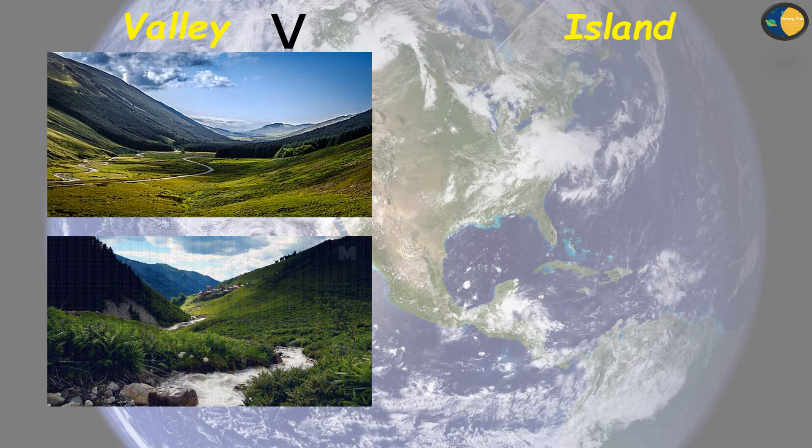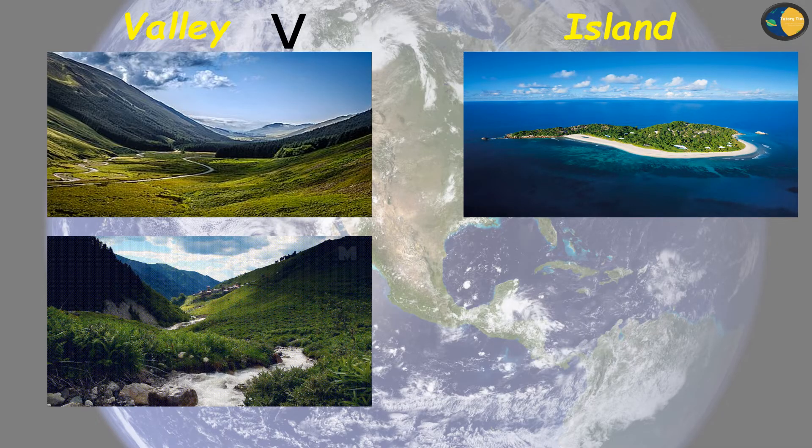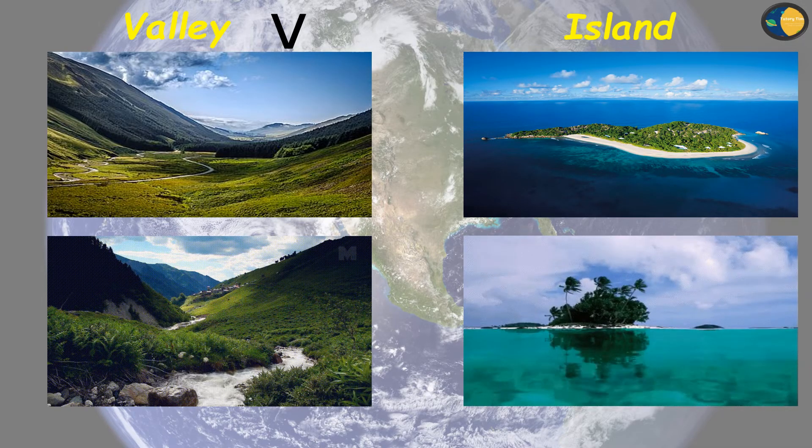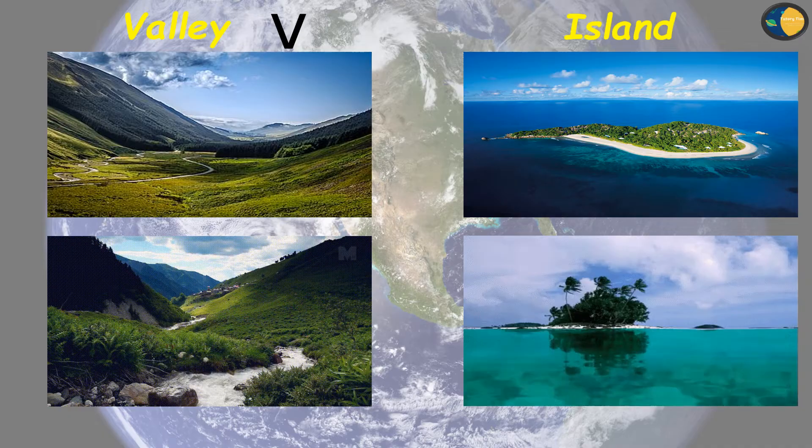Next we have is island. A piece of land surrounded by water on all sides is called an island. The weather on an island is very pleasant.